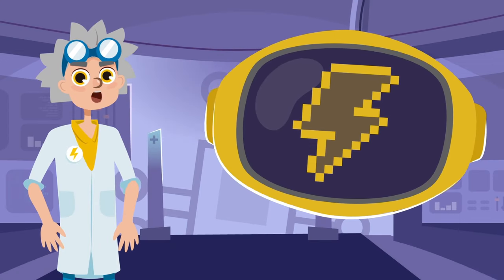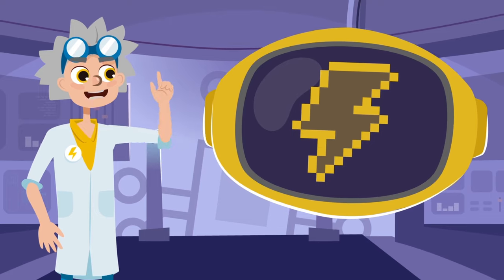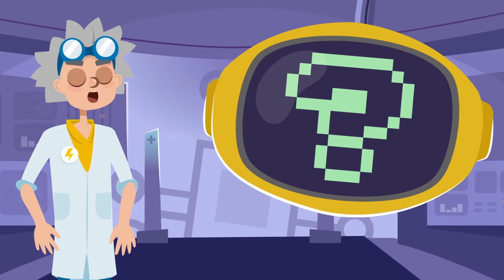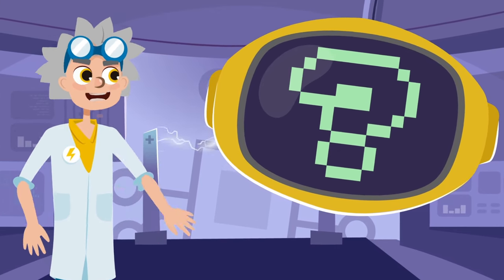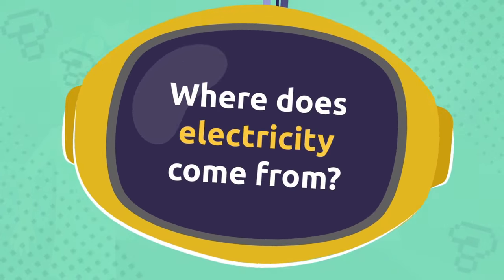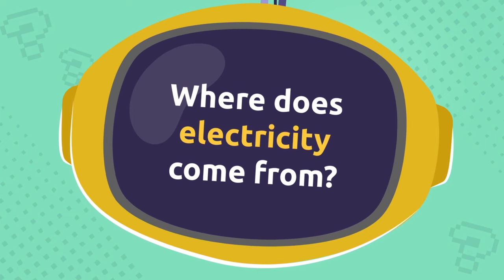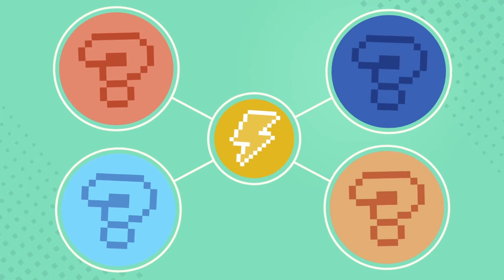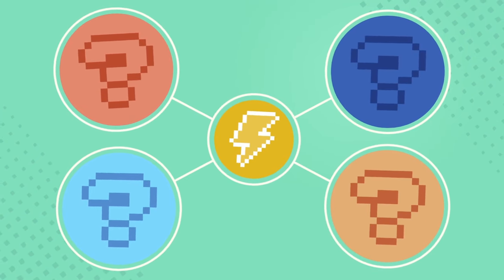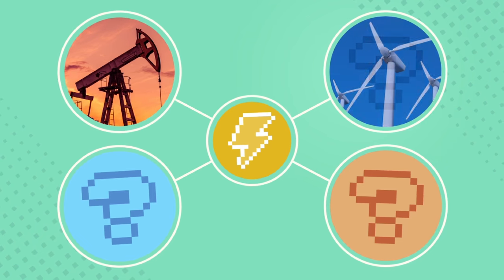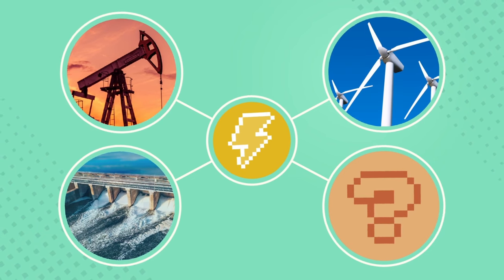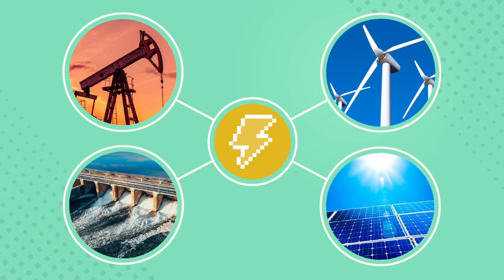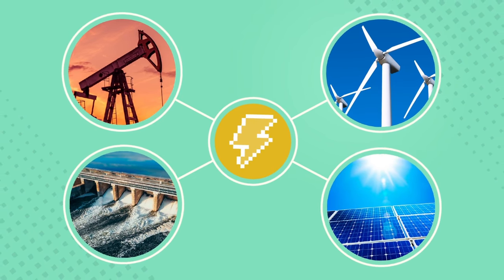As our last friend said, electricity can be produced in many different ways. Let's find out! We can use energy from natural resources like fossil fuels, wind, water, and the Sun to create electricity. Let's take a look.